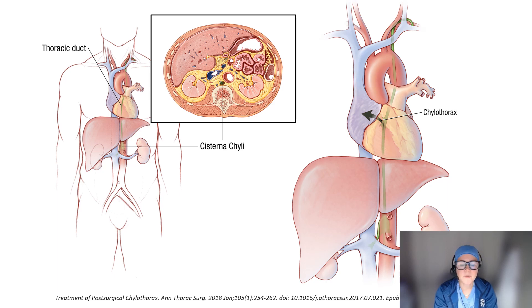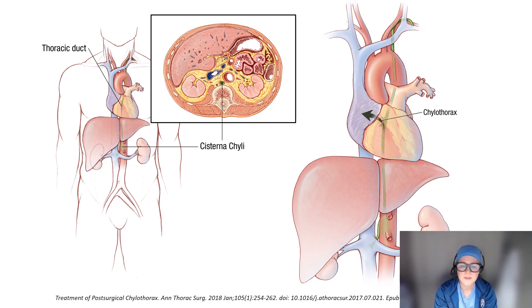Chylous effusion can result from benign or malignant occlusion of the thoracic duct, resulting in collateral formation, or disruption of the main thoracic duct with subsequent leakage of lymphatic fluid into the pleural space. Disorders of chylothorax include lymphangioleiomyomatosis, yellow nail syndrome, and malignancy.